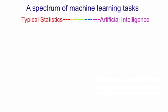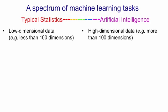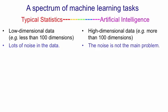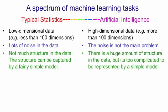We need to distinguish between different kinds of machine learning tasks: ones more typical of statistics, and ones more typical of artificial intelligence. At the statistics end of the spectrum, you typically have low-dimensional data — a statistician thinks of 100 dimensions as high-dimensional. At the AI end of the spectrum, things like images or coefficients representing speech typically have many more than 100 dimensions. At the statistics end, there's usually a lot of noise in the data, whereas at the AI end, noise isn't the real problem. For statistics, there's often not that much structure in the data, and what structure there is can be captured by a fairly simple model. At the AI end, there's typically a huge amount of structure, but it's too complicated to be captured by a simple model.